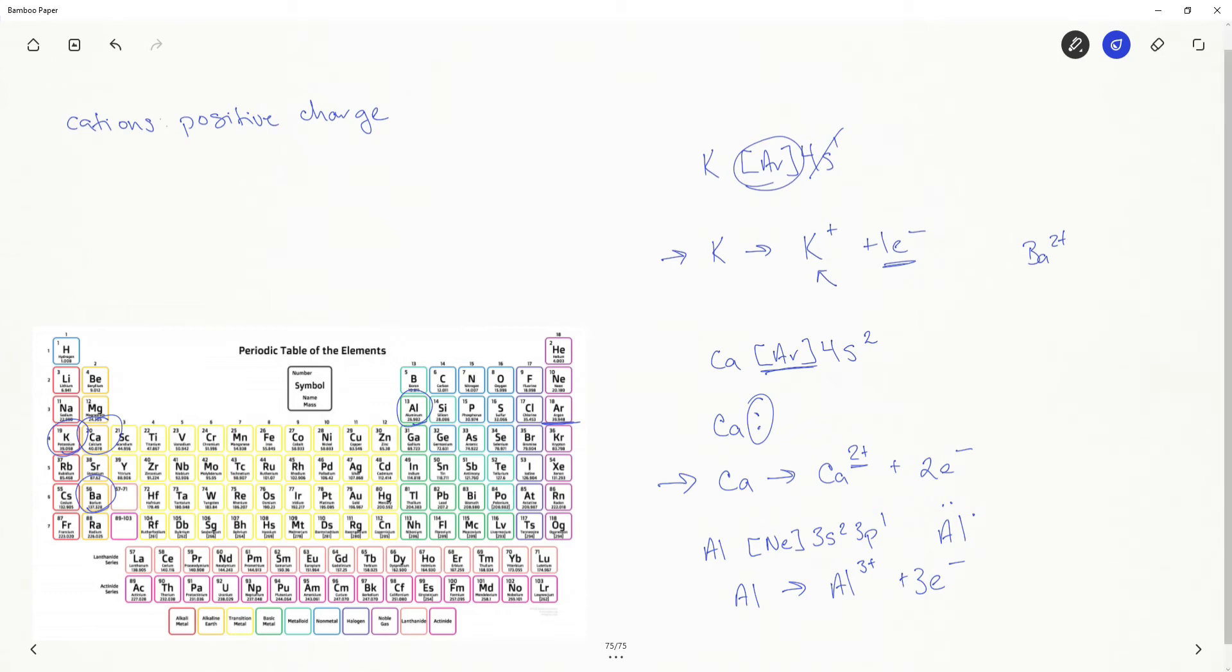Now, where this gets difficult is in the transition metals and also here in the F block. For example, iron right here can have a charge of two plus or three plus. This has to do with open spaces in the D orbitals. So we cannot generally predict from the periodic table the charges on our transition metals or our F block metals. However, even just sticking within the S block and the P block to predict our cations and anions is hugely helpful.